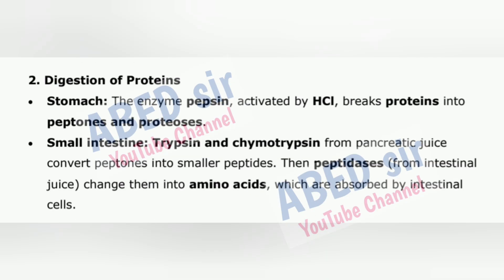2. Digestion of Proteins — Stomach: the enzyme pepsin, activated by HCl, breaks proteins into peptones and proteoses. Small intestine: trypsin and chymotrypsin from pancreatic juice convert peptones into smaller peptides. Then peptidases from intestinal juice change them into amino acids, which are absorbed by intestinal cells.